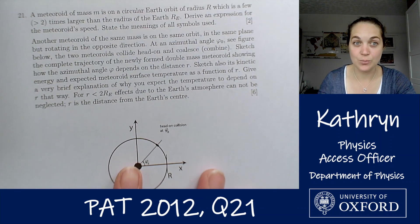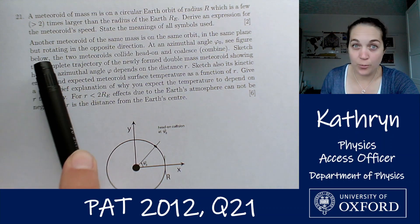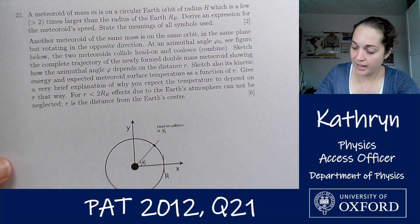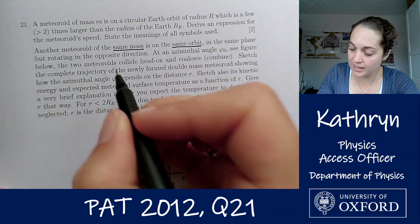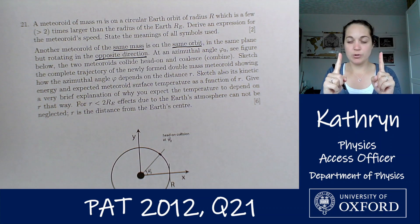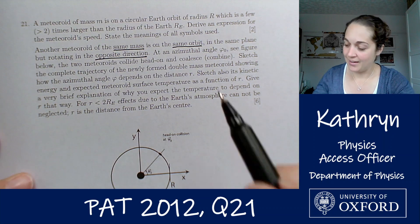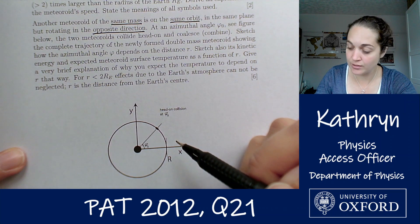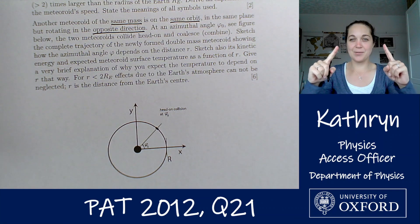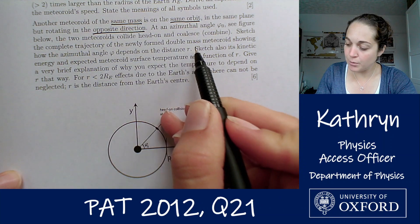Let's have a look at part two. This looks quite big, so we'll break it down. First, we'll read the whole thing to build a picture of what we're aiming for. Another meteoroid of the same mass is on the same orbit, in the same plane, but rotating in the opposite direction. So we've got two meteoroids both going around the Earth in the same orbit and plane but in opposite directions. At an azimuthal angle φ₀ (see the figure), the two meteoroids collide head-on and coalesce.